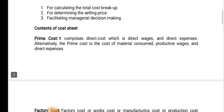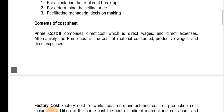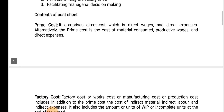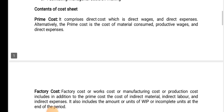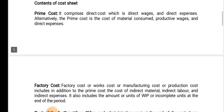Alternatively, the prime cost is the cost of material consumption, productive wages and direct expenses. This is the cost of material, direct expenses and direct wages. If you have direct costs, you will have direct costs in prime cost.